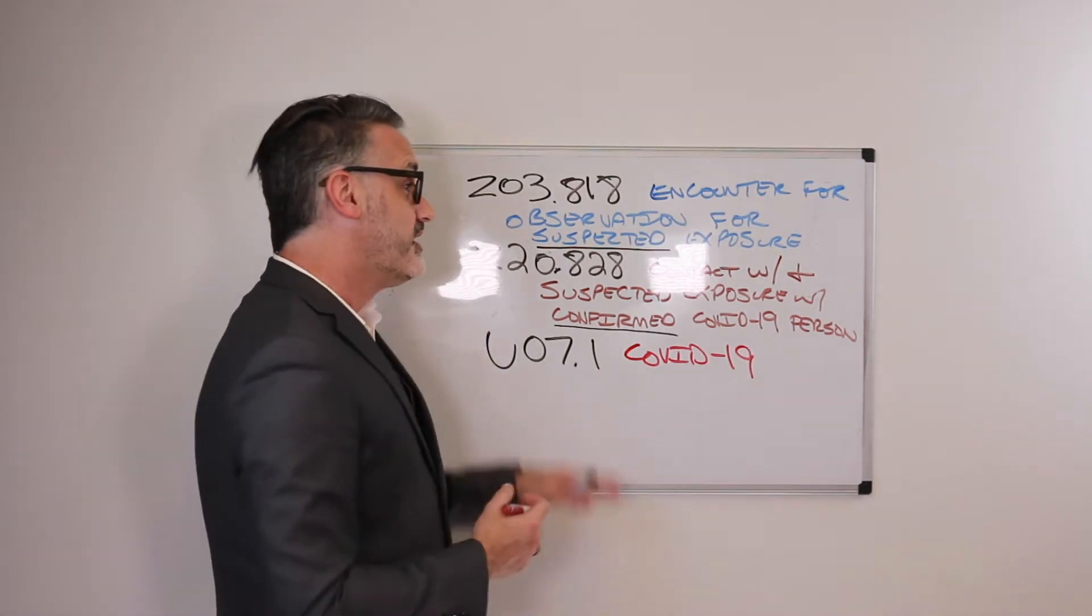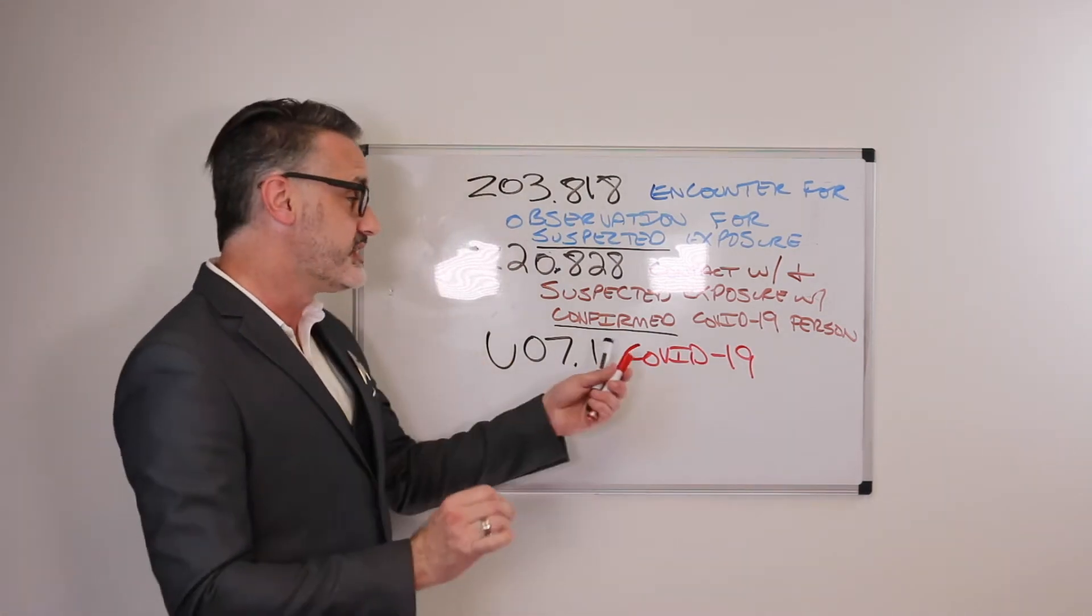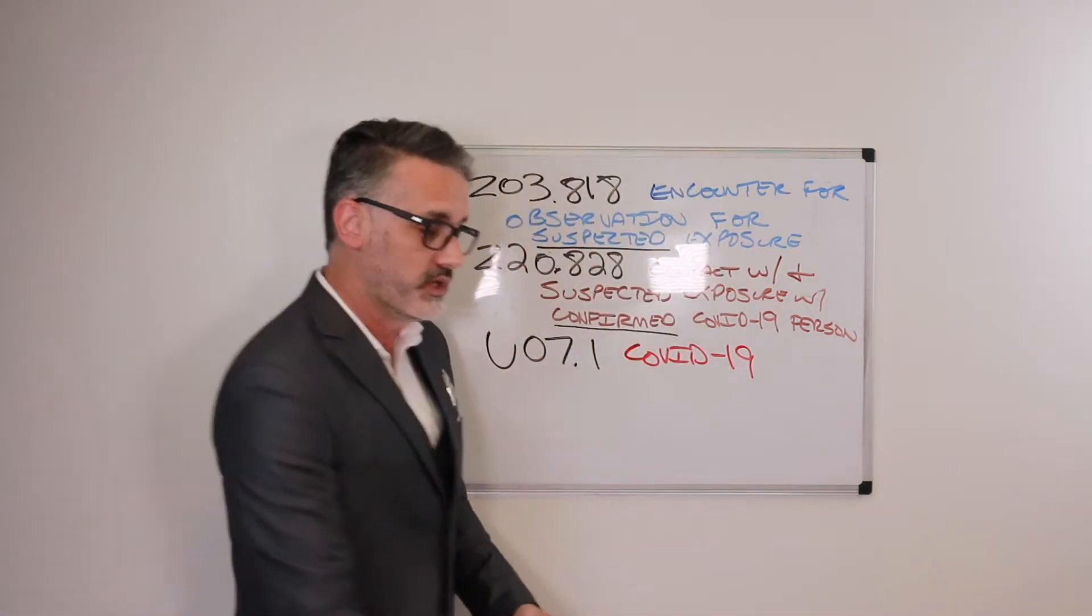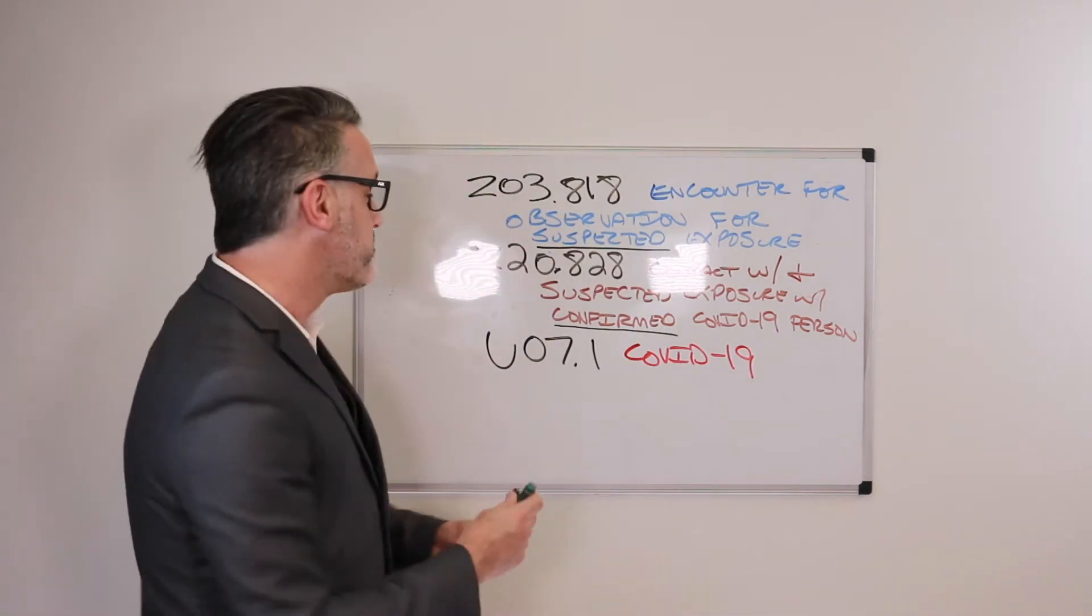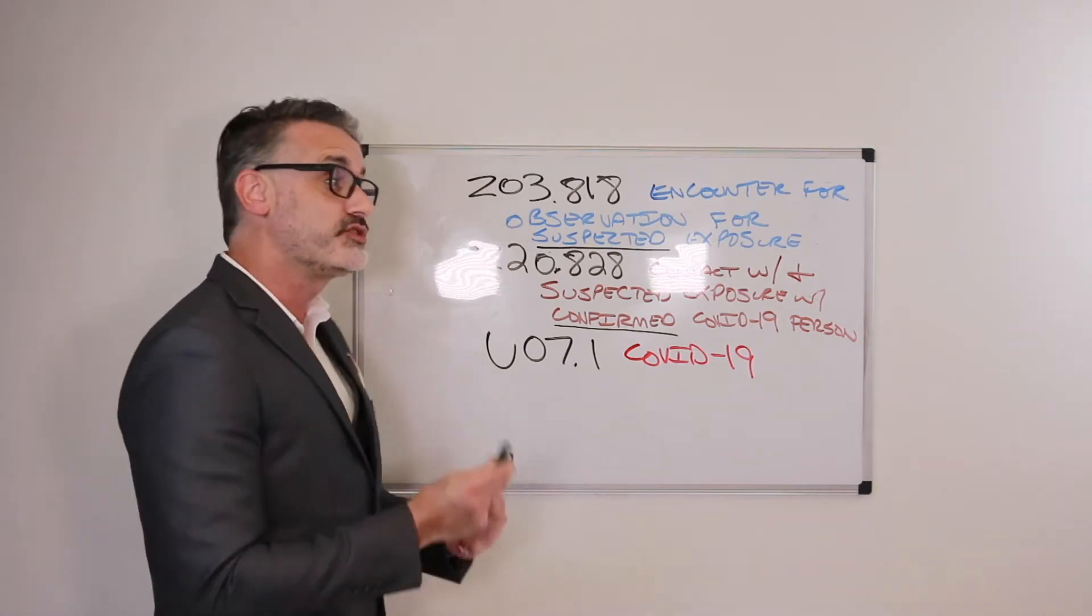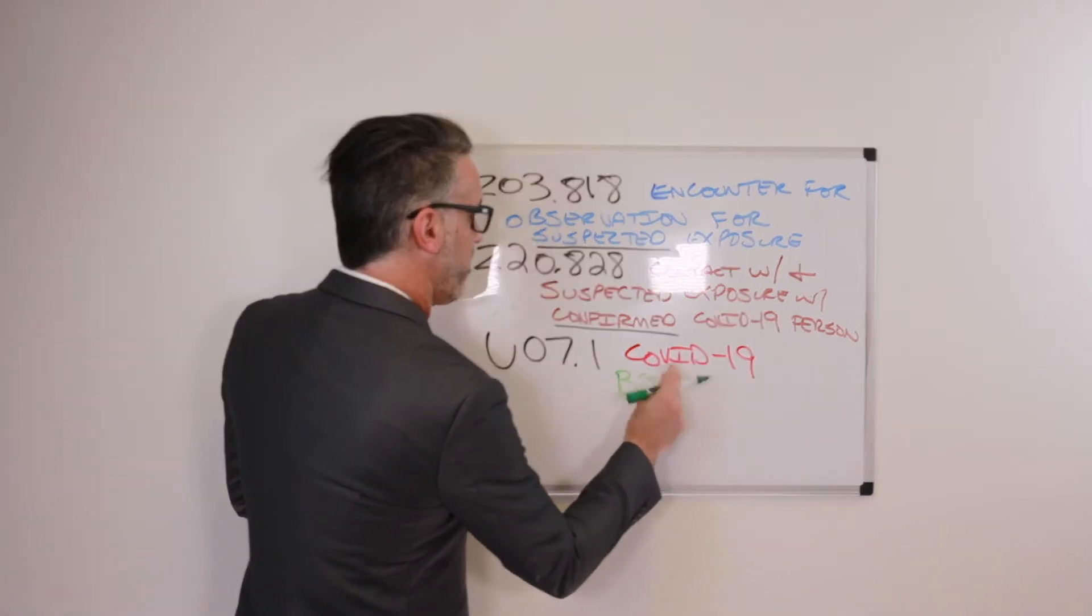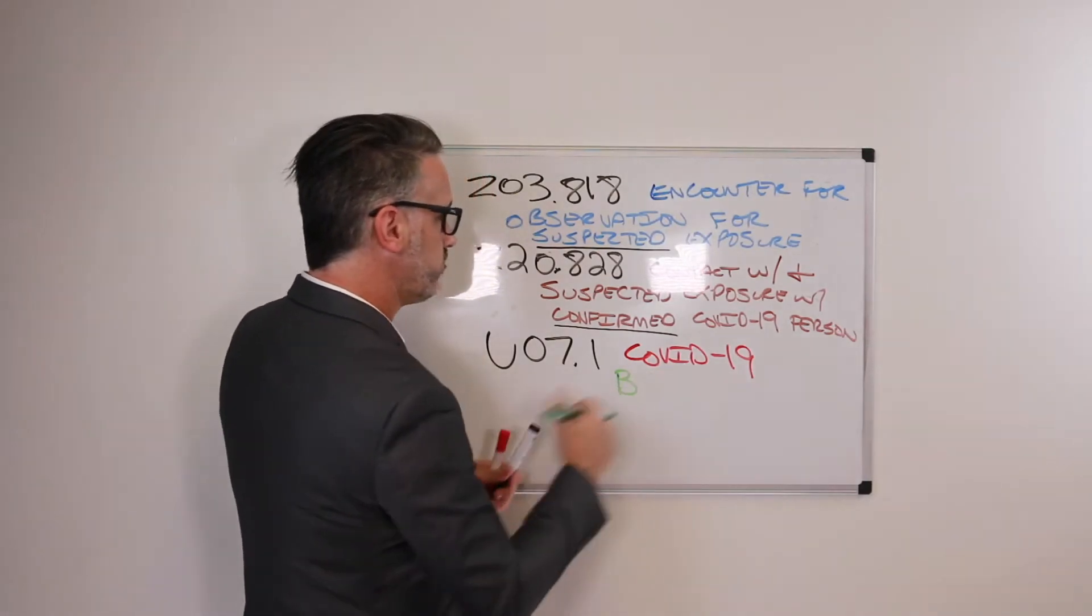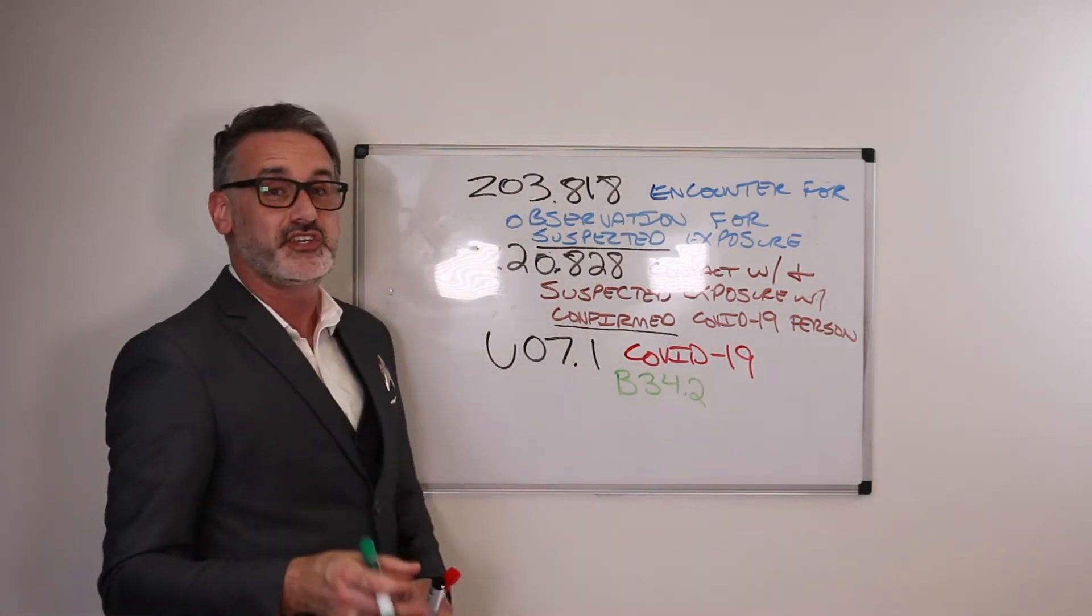Now, with the U07.1, it does have a few excludes one rules. And I'm just going to write down the code numbers, because these exclude one rules are already existing codes. So with the U07.1 for positive COVID-19 testing, the excludes1 codes include B34.2.